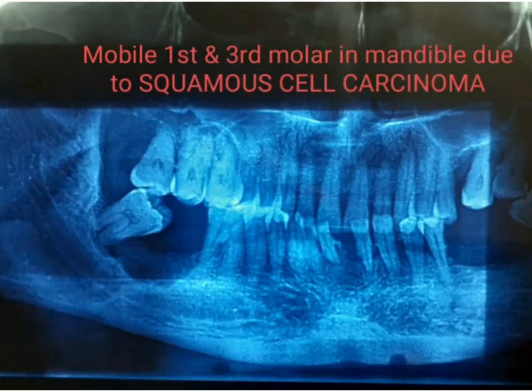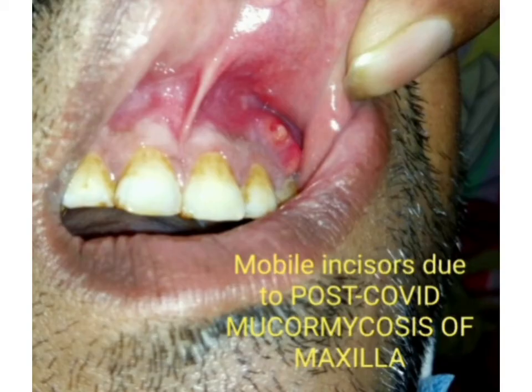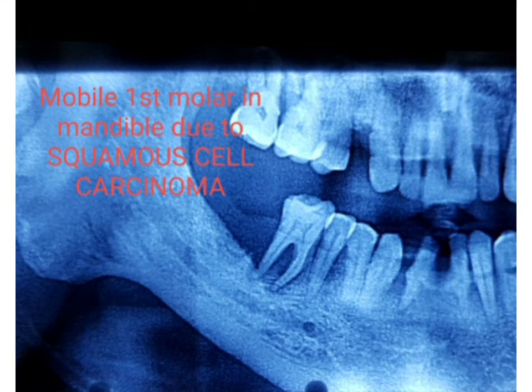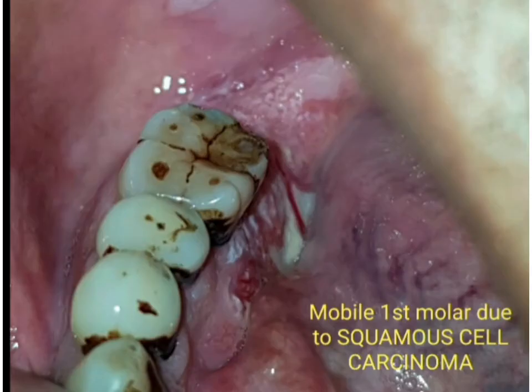The first and third molars in the mandible became mobile because of squamous cell carcinoma. These otherwise healthy-looking incisors had mobility due to post-COVID mucormycosis involving the maxilla. The same was true for mobile first and second molars in the maxilla — this patient also had post-COVID mucormycosis of the maxillary posterior region. The first molar in the mandible was having mobility due to squamous cell carcinoma, and the next slides show the clinical pictures of the same patient.